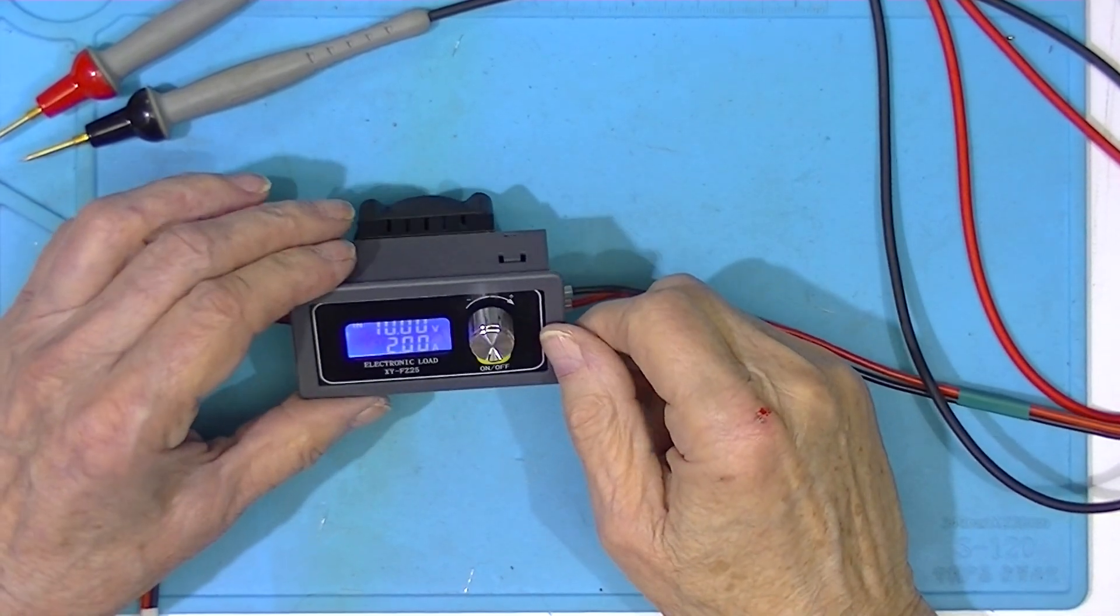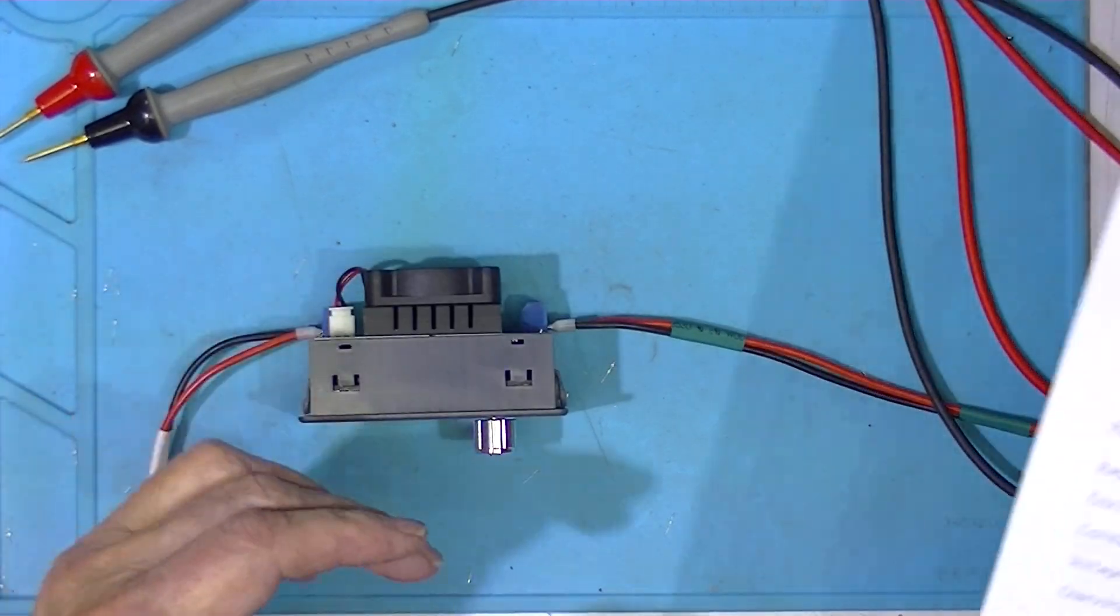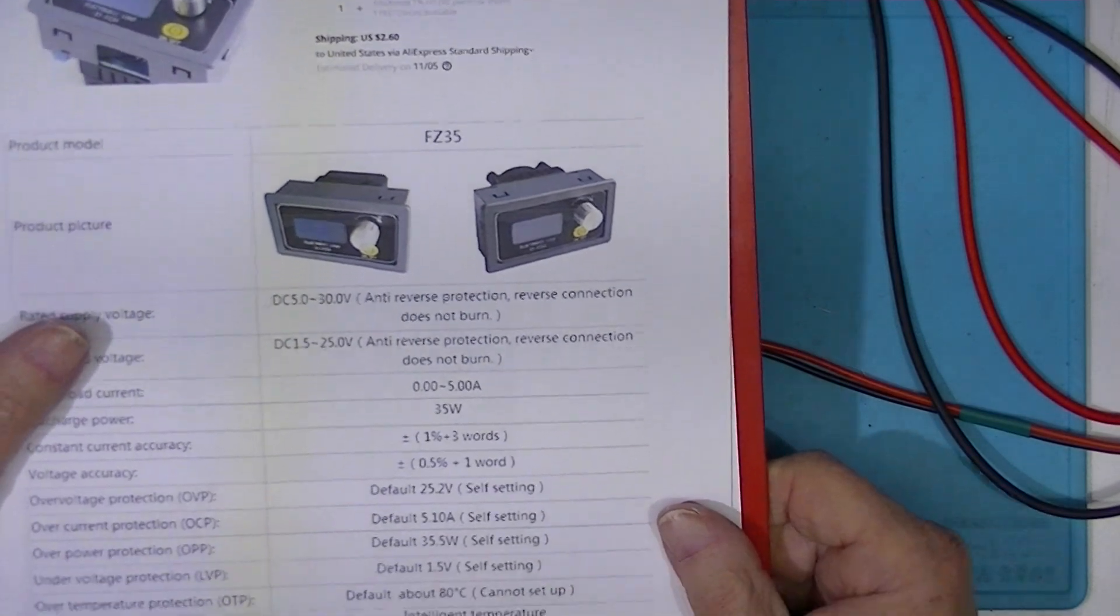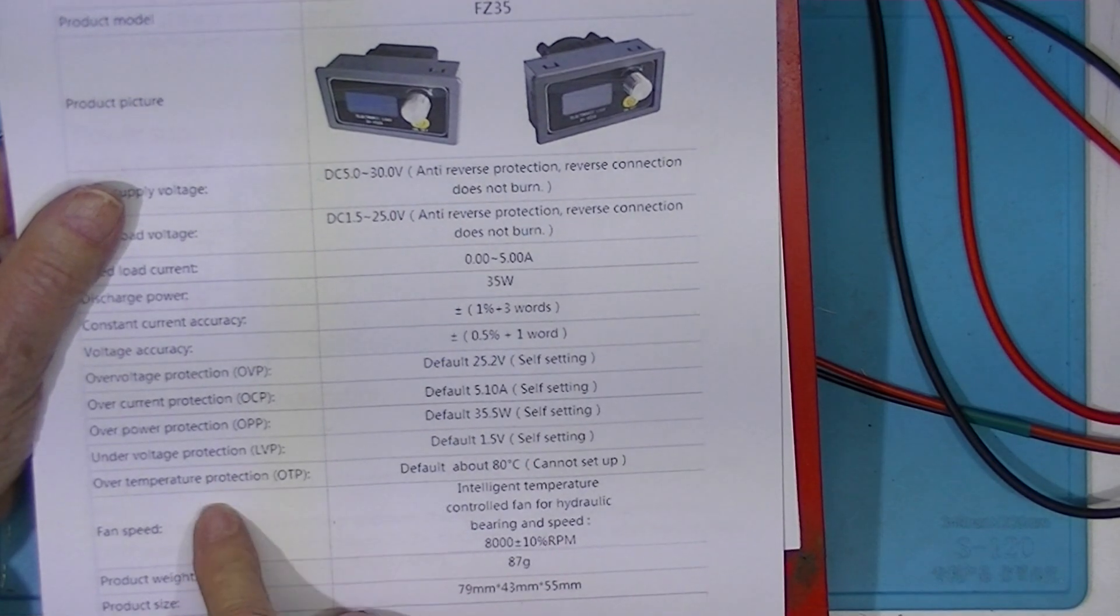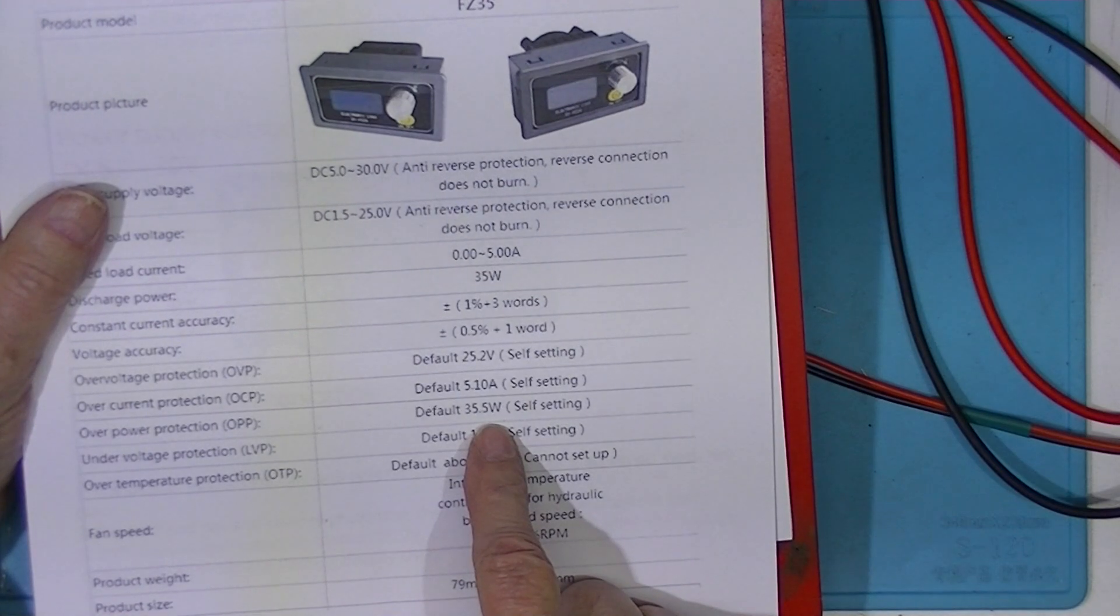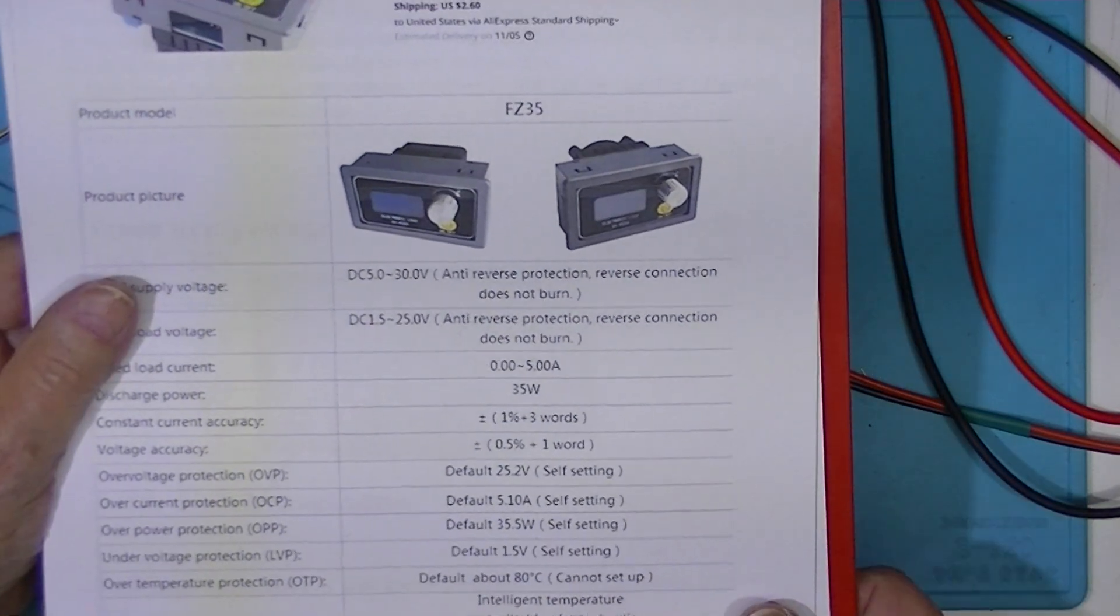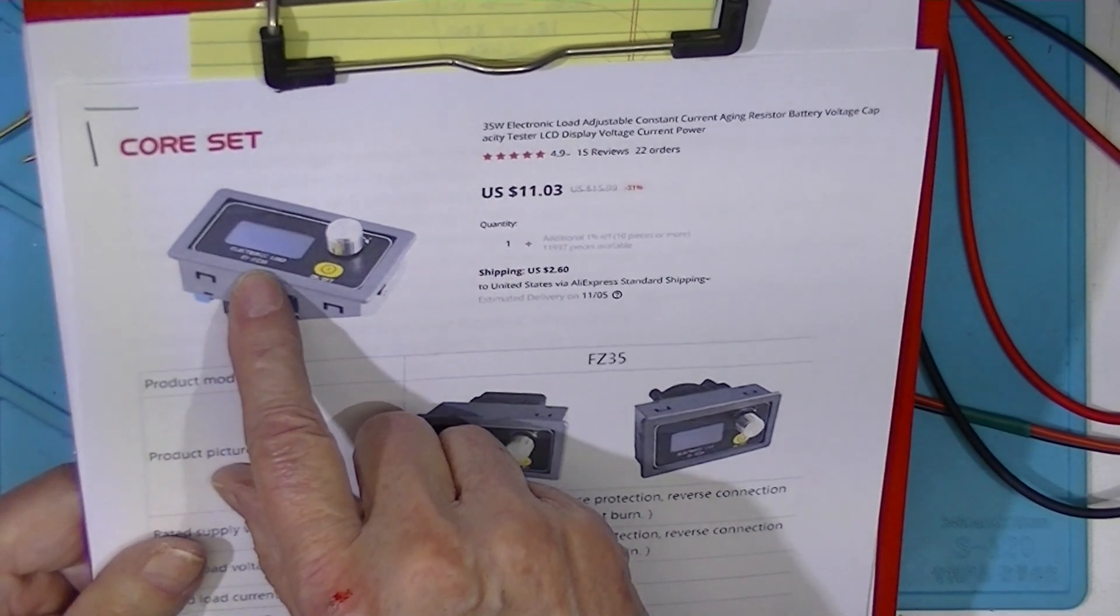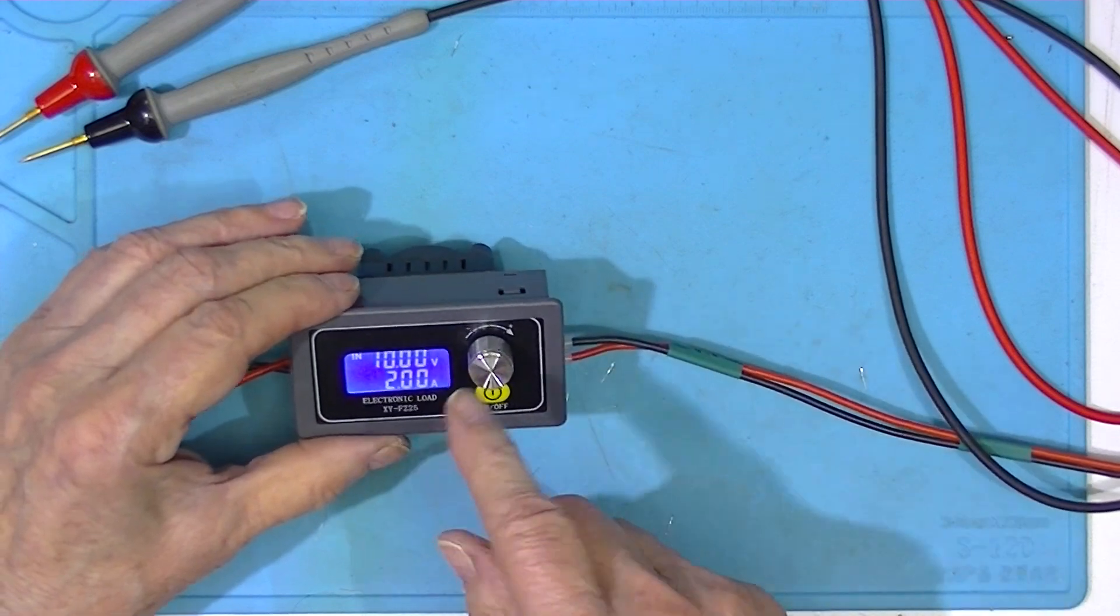It's been 20 minutes at 20 watts. Now, according to whatever documentation this is, this has over voltage protection, over power protection, over temperature protection. Let's run this thing up, not knowing if it's a 25 watt or a 35 watt. Let's run it up to 30 watts.